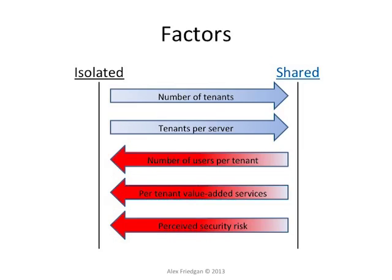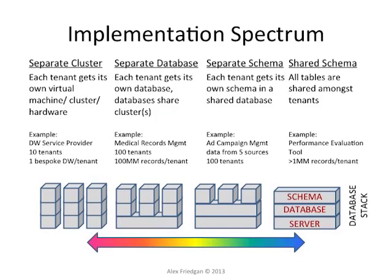We talked about two extreme cases — everything is shared and nothing is shared. But there is actually a spectrum of implementation scenarios. If you look at the database stack consisting of server, database, and schema, you can see four different categories. From left to right, each next category has more shared components.